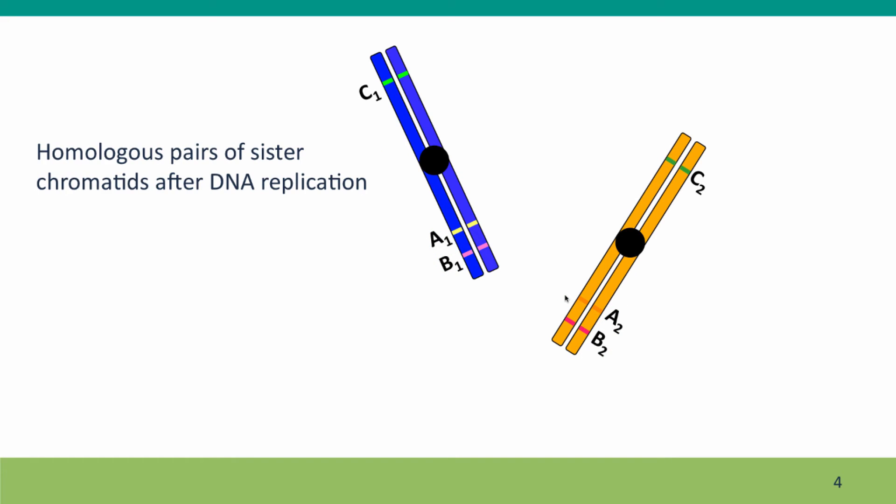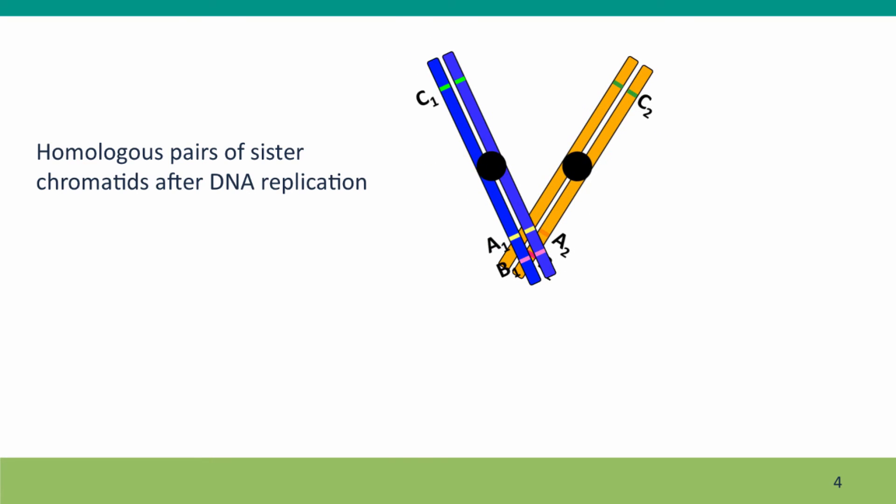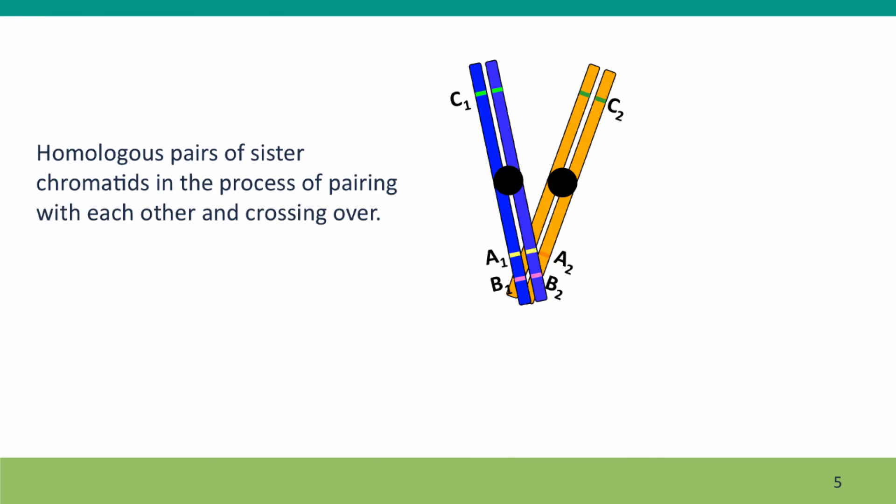Now the chromosomes have replicated, and you'll note that the sister chromatids have exactly the same alleles as they should. And the chromosomes can come together and maybe undergo a crossover.